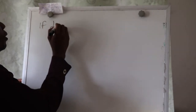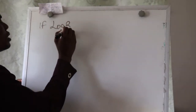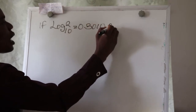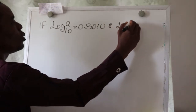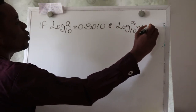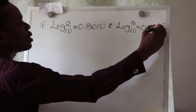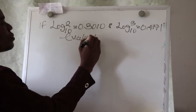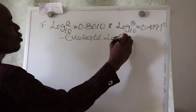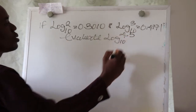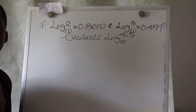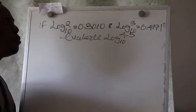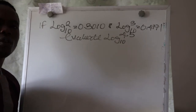If log 2 base 10 is equal to 0.3010 and log 3 base 10 is equal to 0.4771, you are asked to evaluate log 4.5 base 10. When given this question, all you need to do is make sure that you follow the laws of logarithm.